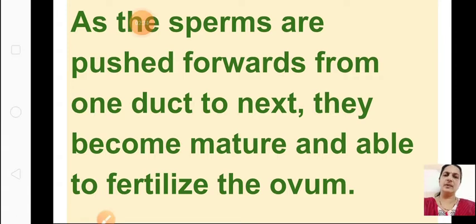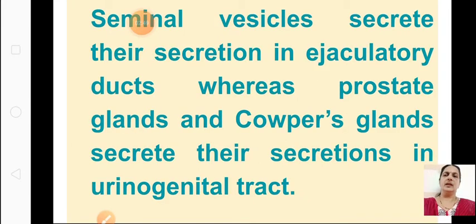When sperms are released from the testes, they are immature. As they pass from one duct to another, they become mature and can fertilize with the ovum. Seminal vesicles secrete their secretion into the ejaculatory duct, whereas prostate and Cowper's glands secrete their secretion into the urinogenital tract.